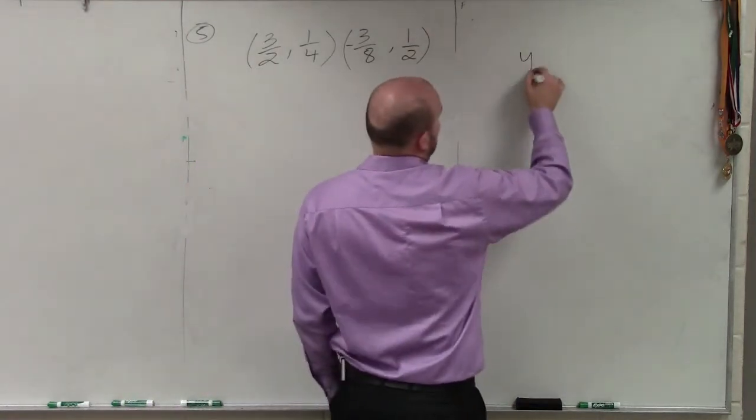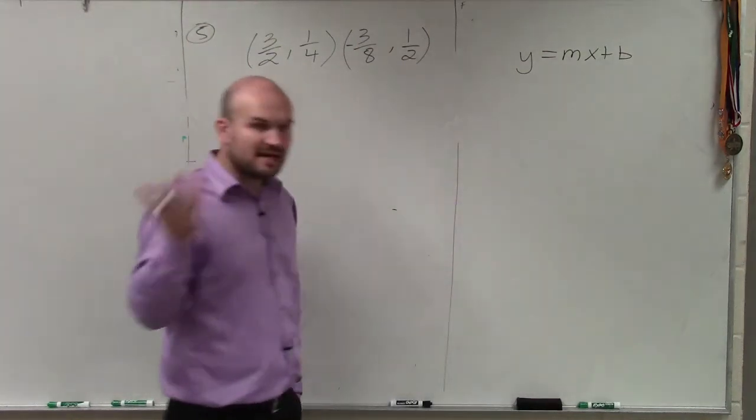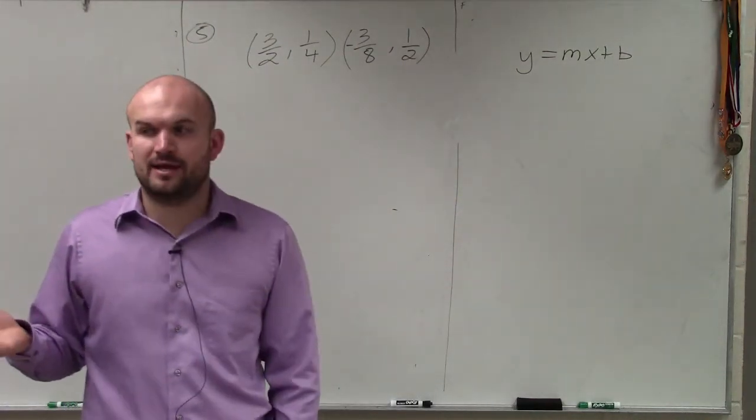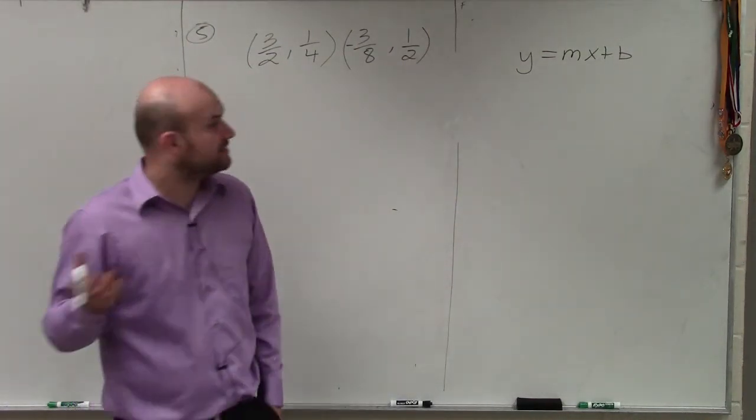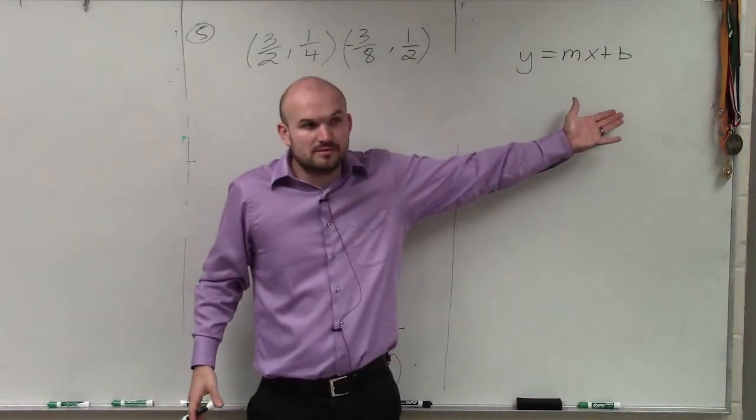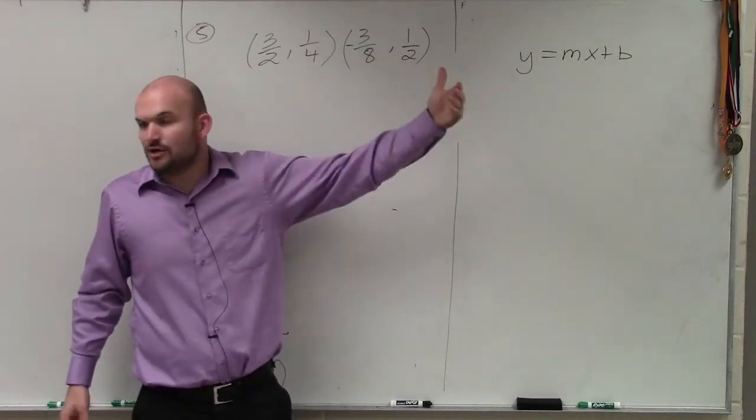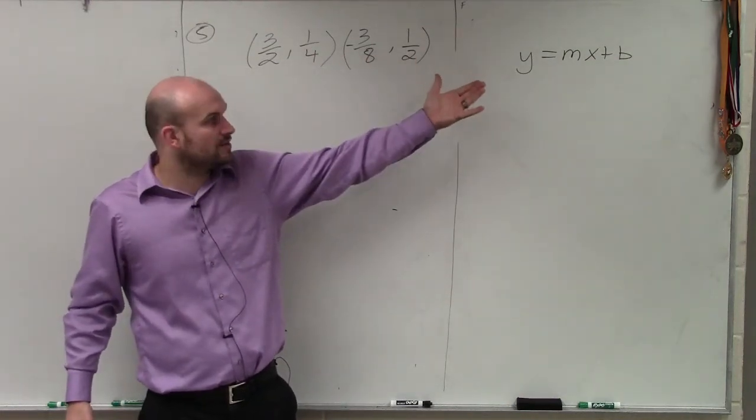But now we're just given two points. So again, the first thing I'm always looking for when I have a problem like this, Brandon and Jordan, is to be able to identify, are one of these points the y-intercepts? Are either one of these points my y-intercepts? No, because remember there'd be 0 comma whatever the value is in the y-axis.